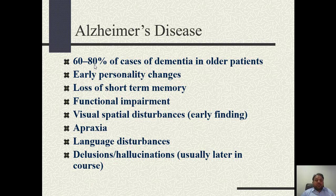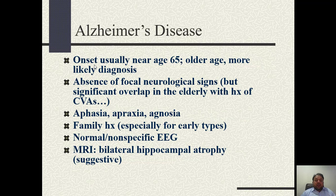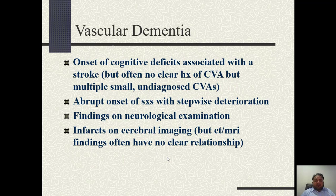In advanced cases of Alzheimer's disease, the patient may have delusions or visual or auditory hallucinations. The onset of Alzheimer's disease is usually after 65 years of age. It usually occurs without any focal neurological deficits, meaning there is no evidence of stroke. On MRI brain, we will see bilateral hippocampal atrophy, which is suggestive of Alzheimer's disease.